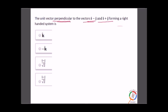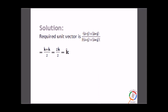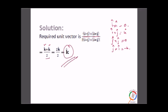Find the unit vector perpendicular to both (i - j) and (i + j) forming a right-handed system. We take the cross product (i - j) × (i + j) and divide by its magnitude. Using cross product properties: i×i = 0, i×j = k, j×i = -k, j×j = 0. Expanding gives k + k = 2k. The magnitude is √2, so the unit vector is 2k/√2 = k. Therefore k is the answer.